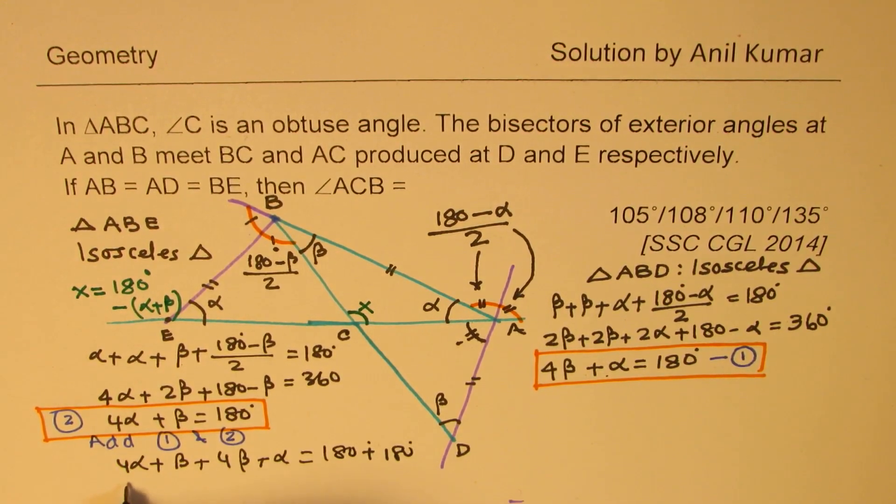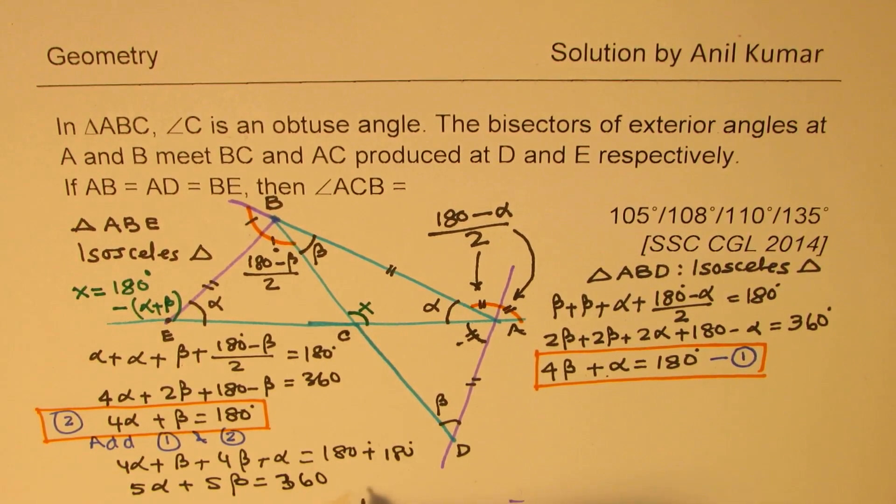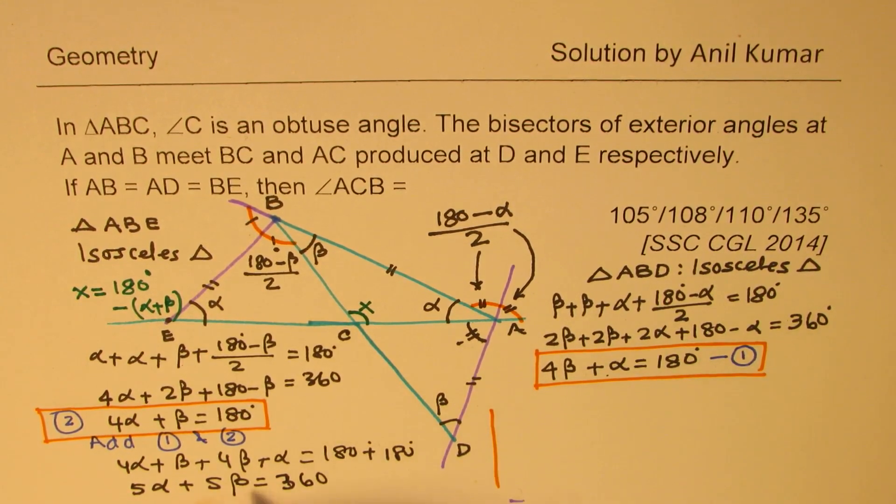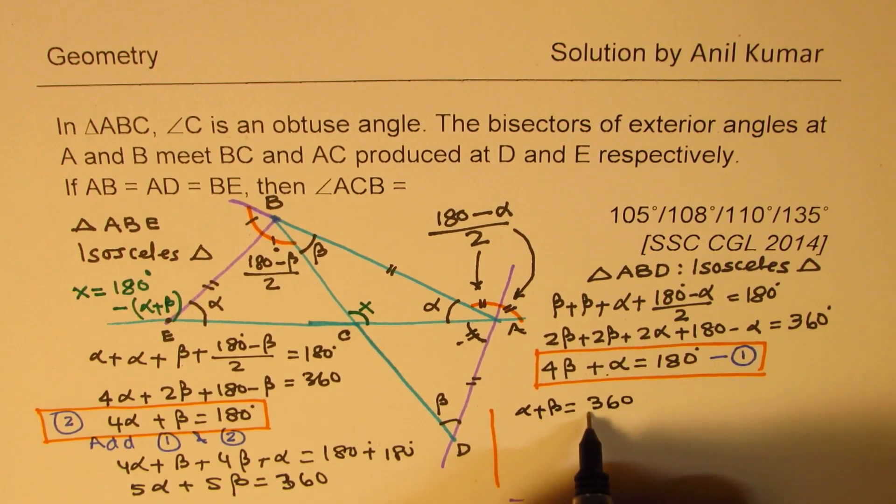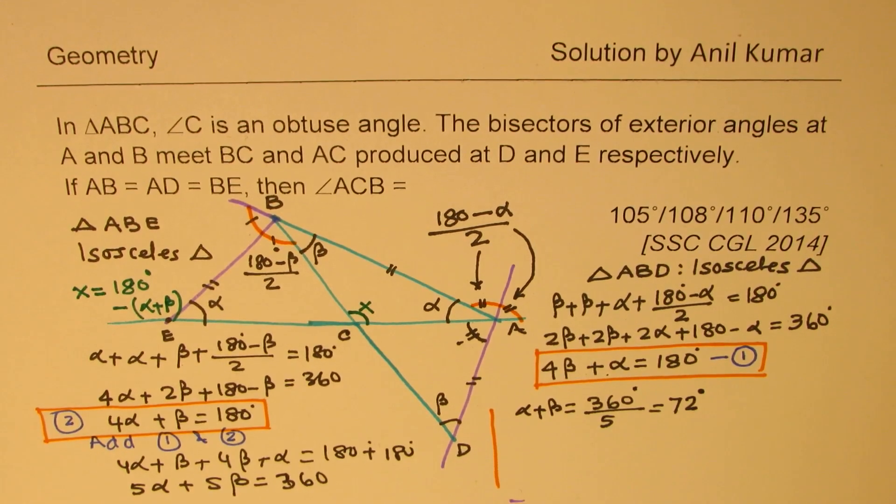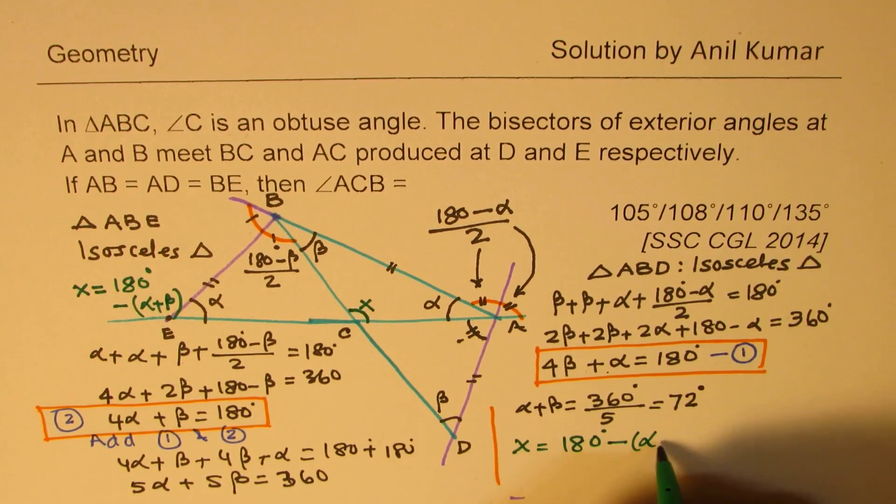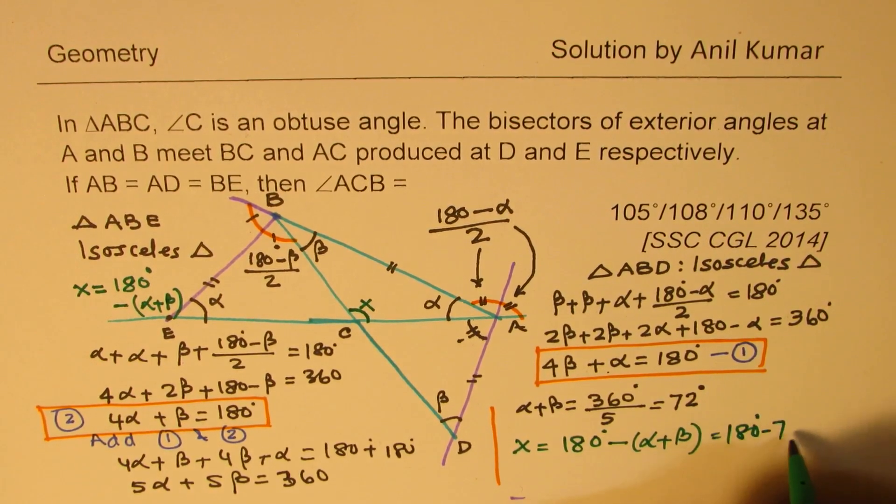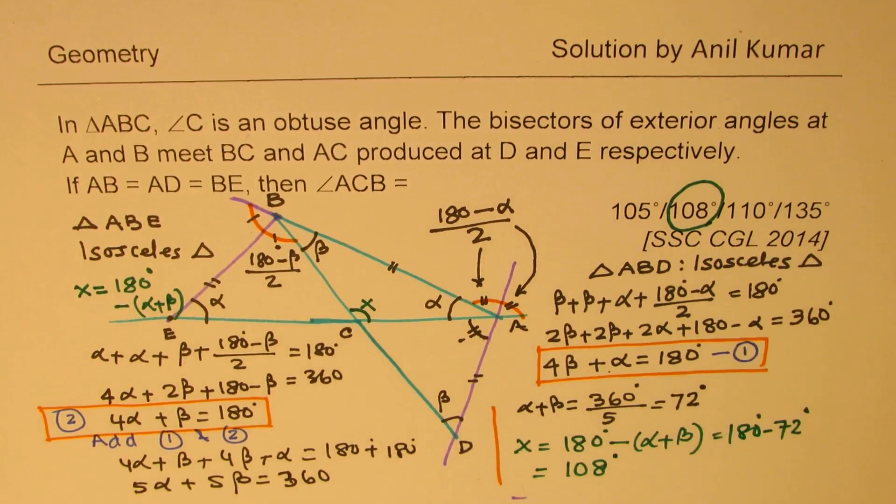So that means we get 5 times alpha plus 5 times beta equals to 180 times 2, which is 360. So that gives you an idea of what alpha and beta is. So we can now take it to this side. So alpha plus beta equals to 360 degrees divided by 5. That goes 7 times and 7 times is 35 and 10, 72 degrees. So alpha plus beta is 72 degrees. Perfect. Now we can find what X is. X is 180 degrees minus alpha plus beta, which is 180 degrees minus 72 degrees, which is equal to 108 degrees. So this option 108 degrees is the correct answer.